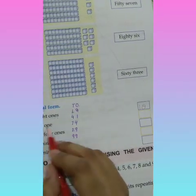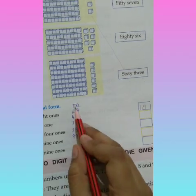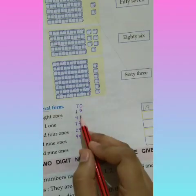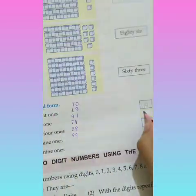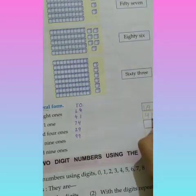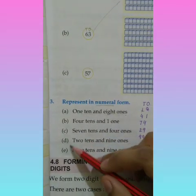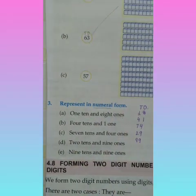Next, 4 tens and 1 one. Write it under T, means tens to 4 tens. And O means ones to 1 one. The number is 41. So, like this, you have to read the next 3 parts and represent them in numeral form.